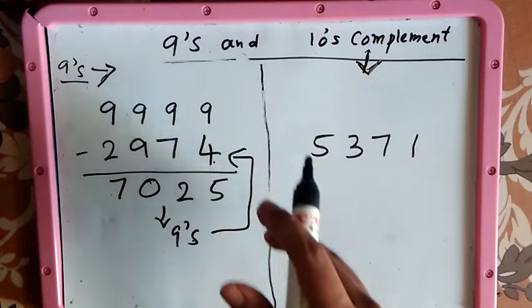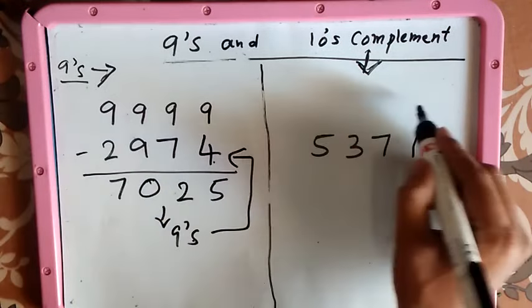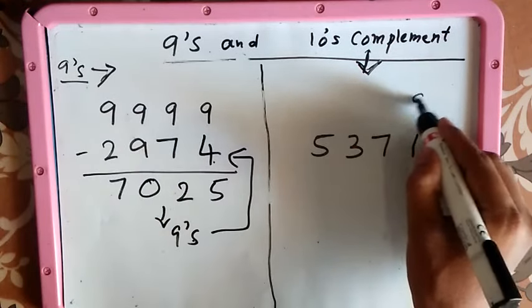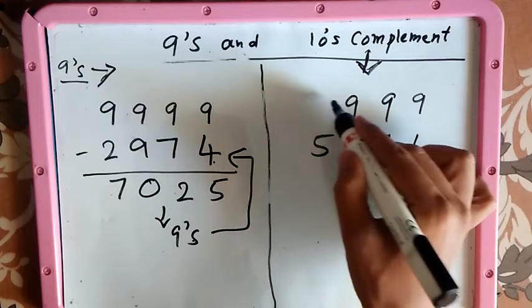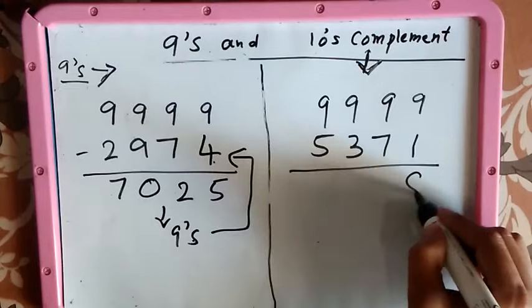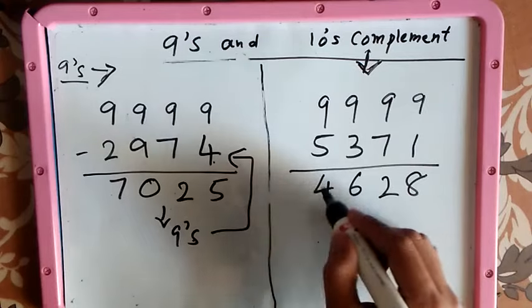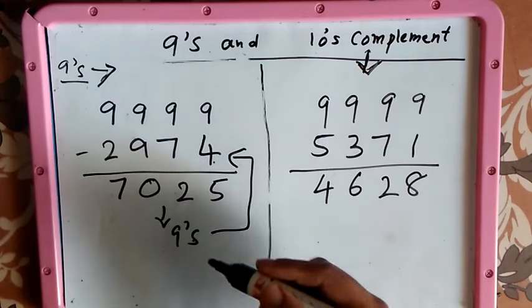For each digit, you have to write above it 9, 9, 9, 9. Then subtract each digit with 9: 9 minus 1 is 8, 9 minus 7 is 2, 9 minus 3 is 6, 9 minus 5 is 4. The next step is you must add 1 to make it a 10's complement.